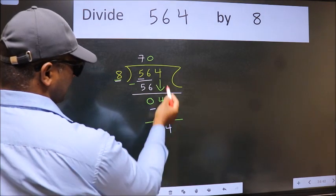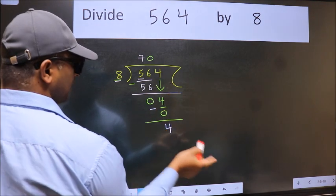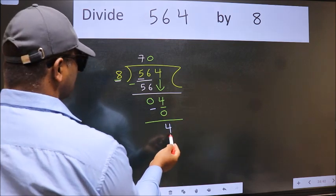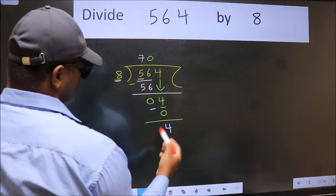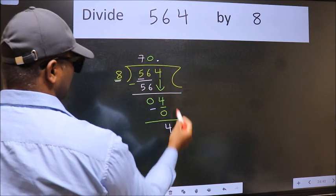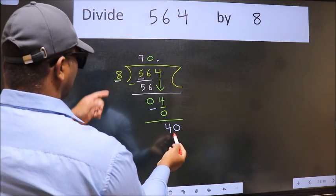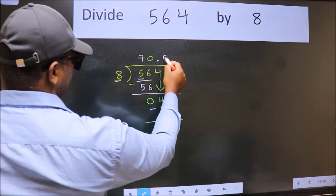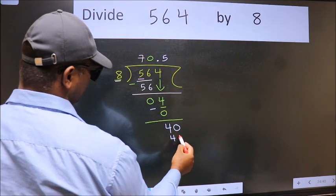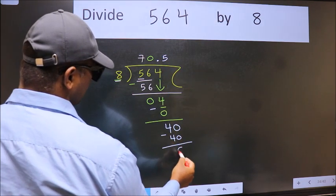Over here, we did not bring any number down, and 4 is smaller than 8. So now we can put dot and take 0. So 40. When do we get 40 in 8 table? 8 times 5 is 40. Now we subtract. We get 0.